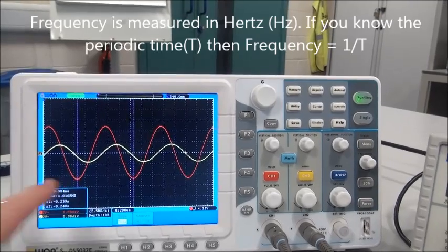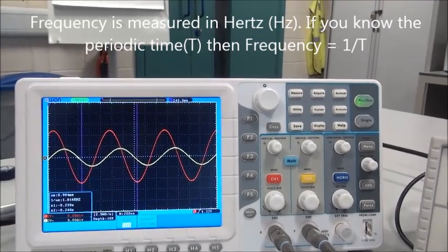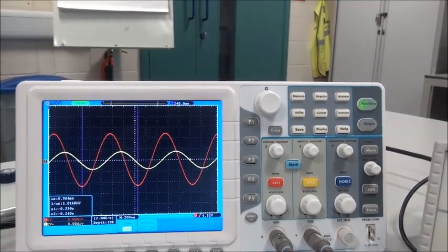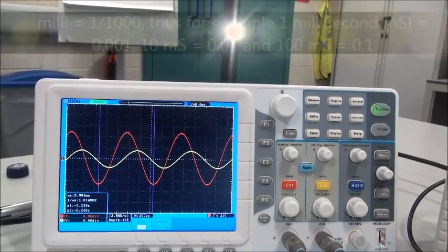Frequency is the amount of full cycles that occur within one second. So, if you were to divide 0.984 milliseconds into one second, you would have a frequency of, and we'll do this one on the calculator.